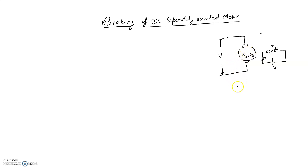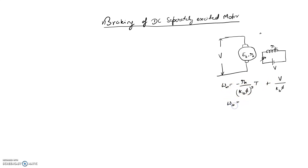Just to recap, we can write Omega M equals minus RA divided by (KB·Φ)² multiplied by T, plus V divided by KB·Φ. This is the same as the previous motor, the only difference being it is a separately excited motor. The speed equation is really the same. We can write it simply as minus M1 times T plus K1, where K1 is a constant and M1 is a slope.